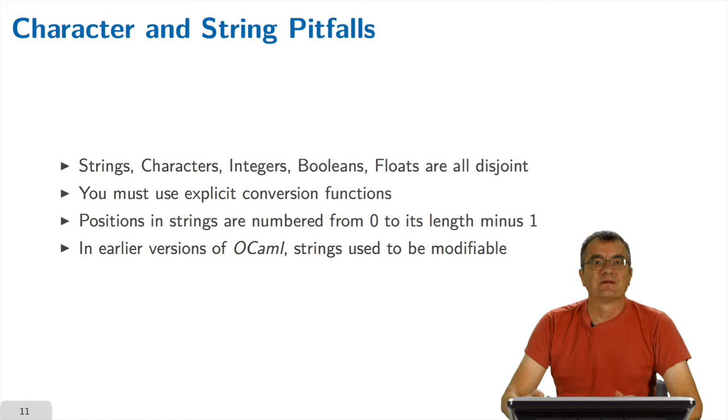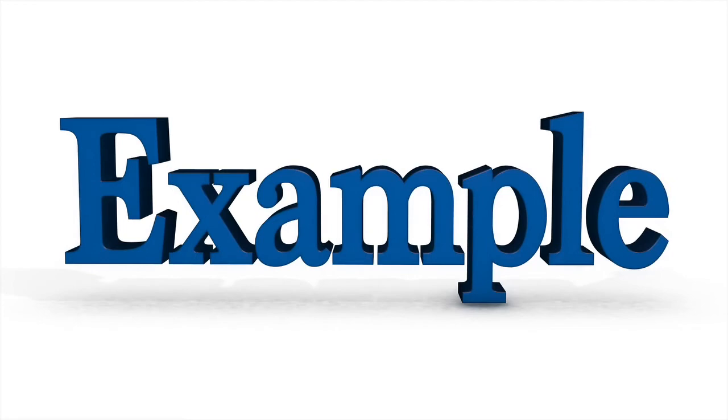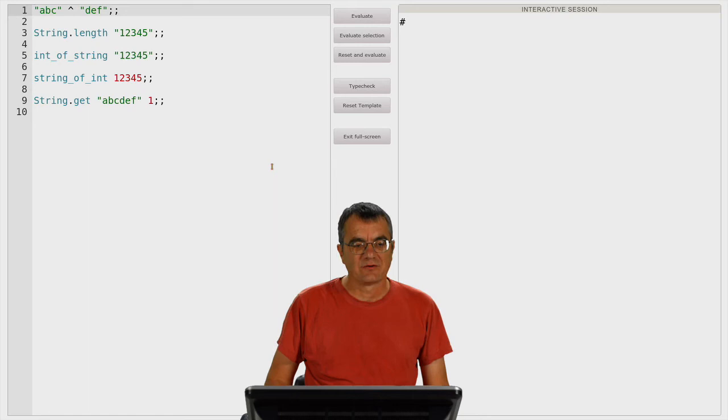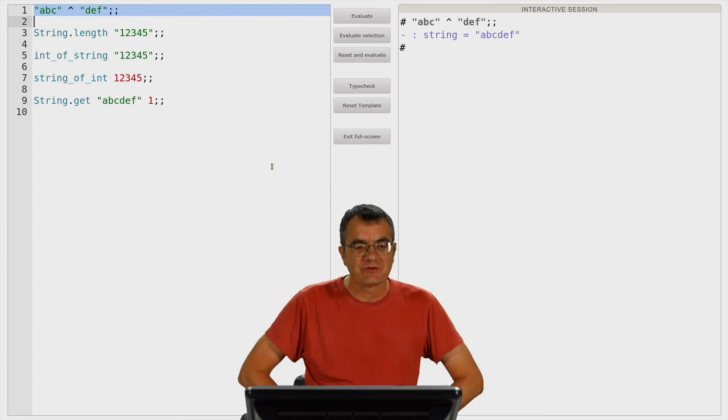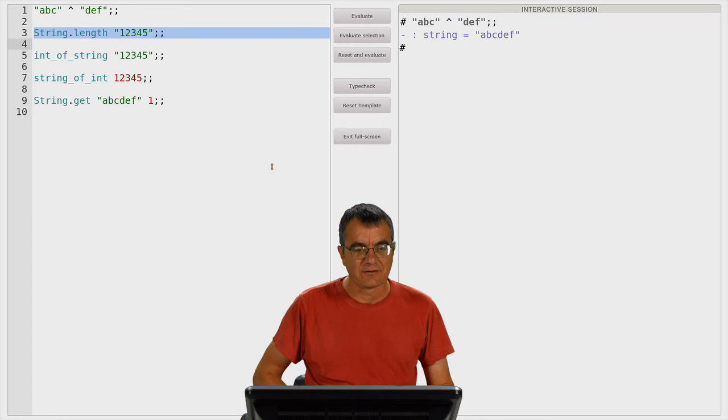Now, some expressions about strings. Here we have the concatenation of two strings ABC and DEF, which gives us, of course, a string ABCDEF. Then we have some basic and important functions on strings, like calculating the length of a string using the function String.length, which is, of course, as expected, 5.